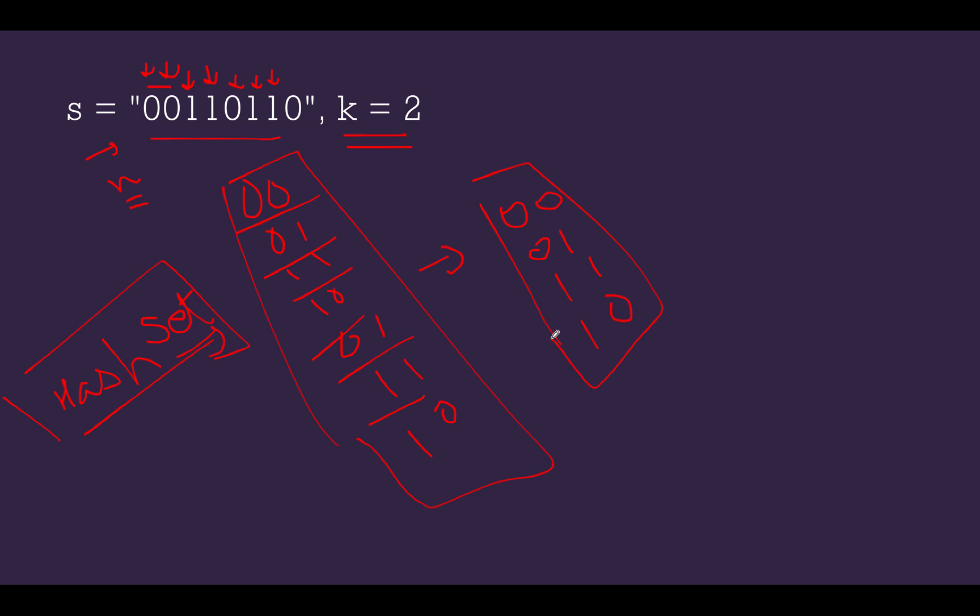So how this will help us determine whether we have covered all the cases or not. There is a mathematical formula which we can use. The total number of binary codes of length k would be 2 raise to power k. And we can compare the size of this hash set with this value. If there is a discrepancy or a mismatch between the expected size and the size of the hash set, we will return false. Otherwise, if there is an exact match, then we will return true.